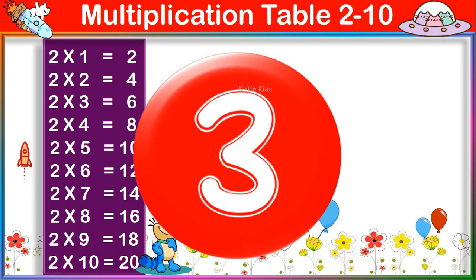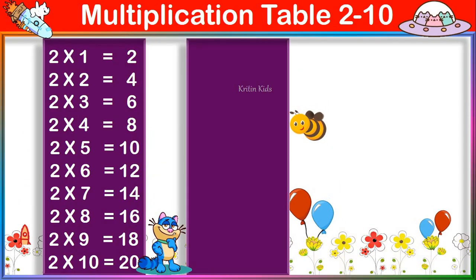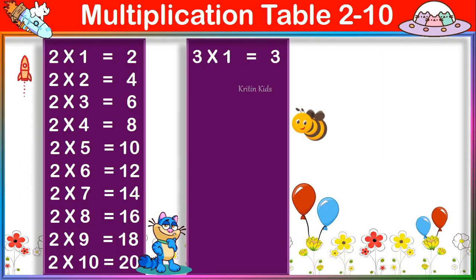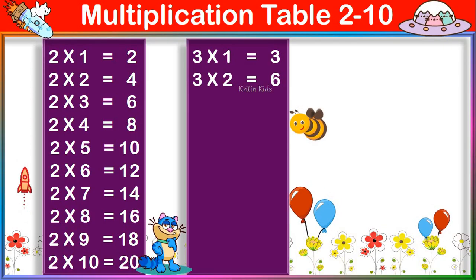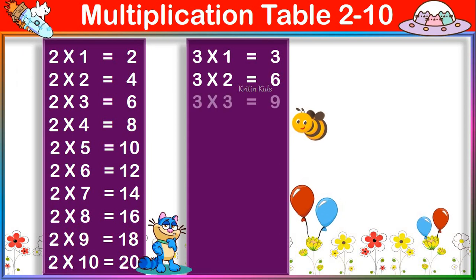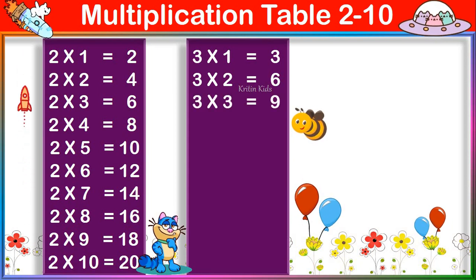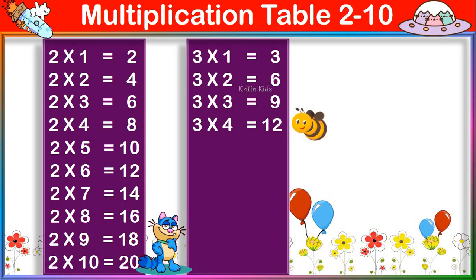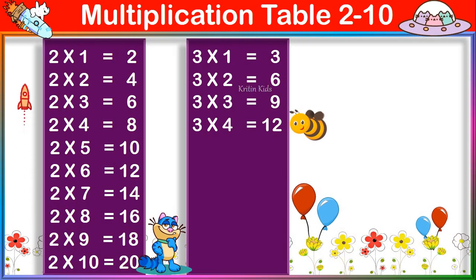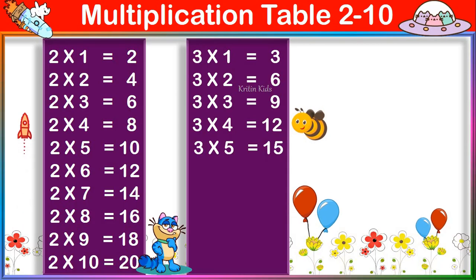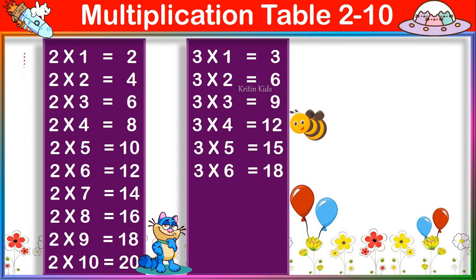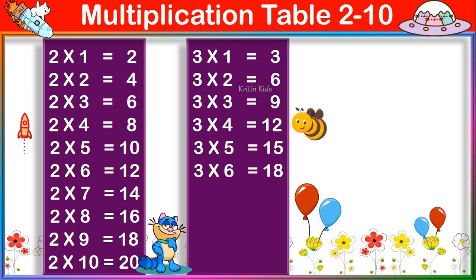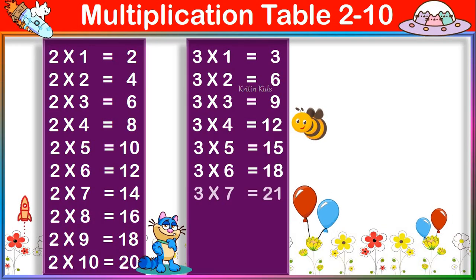Multiplication Table of 3. 3 one's are 3, 3 two's are 6, 3 three's are 9, 3 four's are 12, 3 five's are 15, 3 six's are 18.